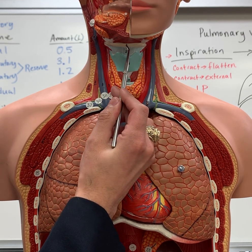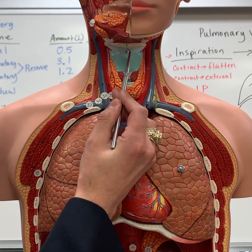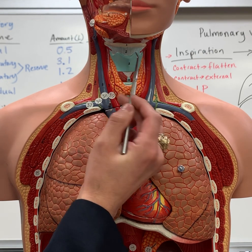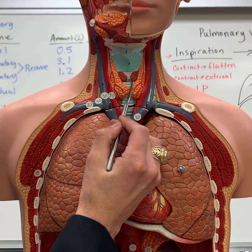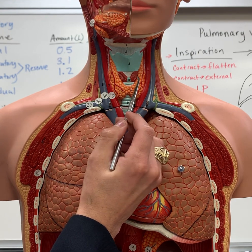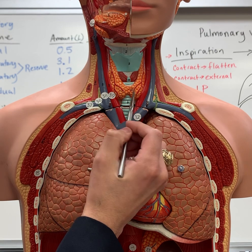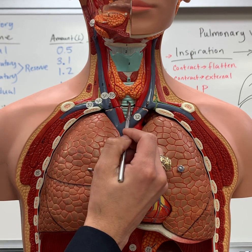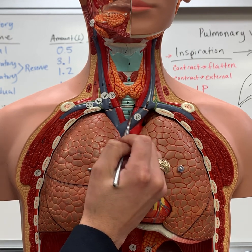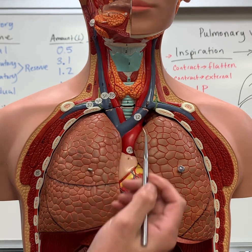Connecting the hyoid and the thyroid cartilage is the thyrohyoid membrane. You also have the cricoid cartilage. Further along, this is what's known as the trachea, and you have the trachea coming down.